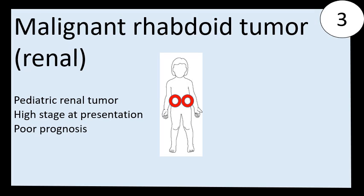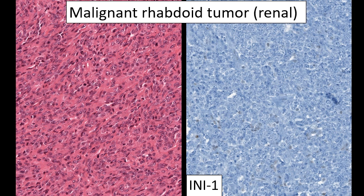Launching into the real reason we are all here — the tumors — starting with malignant rhabdoid tumor. It's a pediatric renal tumor that tends to present at high stage and has a very poor prognosis. At low power it will be somewhat circumscribed but not necessarily encapsulated, with areas of hemorrhage and necrosis. At closer magnification we see sheets of high-grade ovoid cells that can be loosely cohesive, with prominent eosinophilic nucleoli and vesicular chromatin. On immunohistochemistry, all the tumor cells are negative — everything is lost — with maybe an occasional weakly staining lymphocyte serving as a normal internal control.